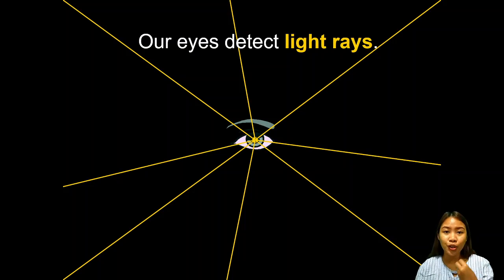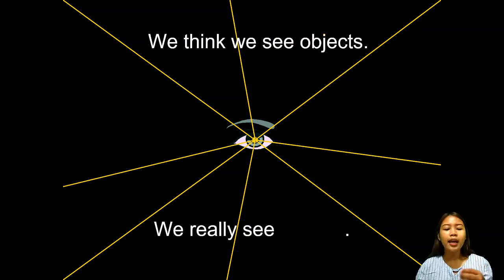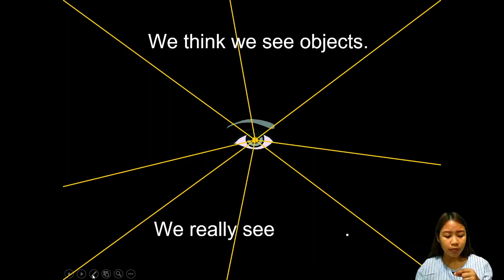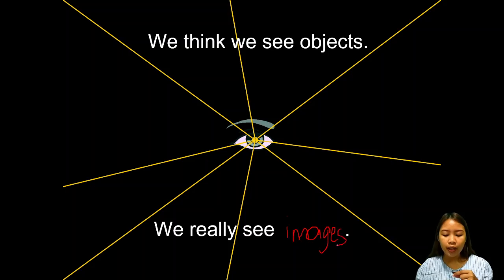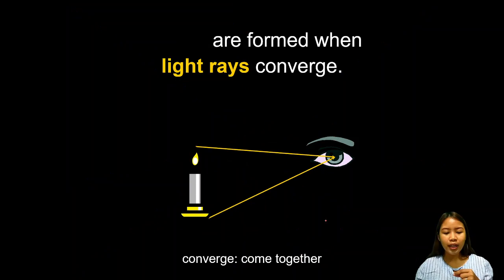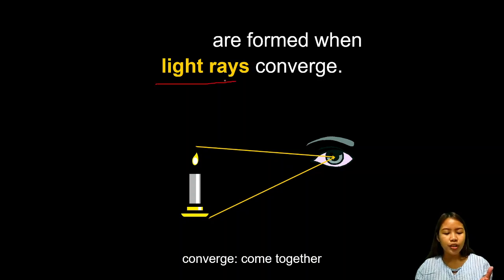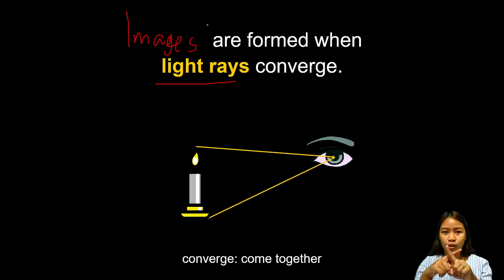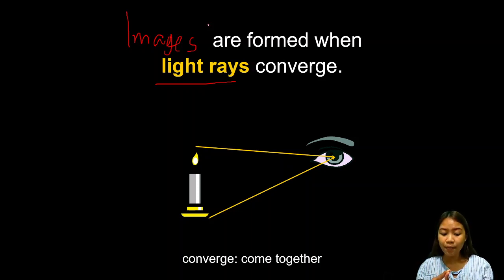Those light rays will enter our eyes. We think we see objects, but the thing is we don't see objects — instead we see images. Images are what we actually perceive, not objects. Images are formed when light rays converge — when they cross or meet at a point, that is where the image is created.